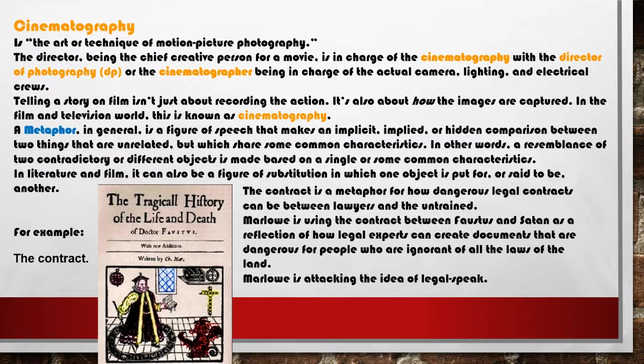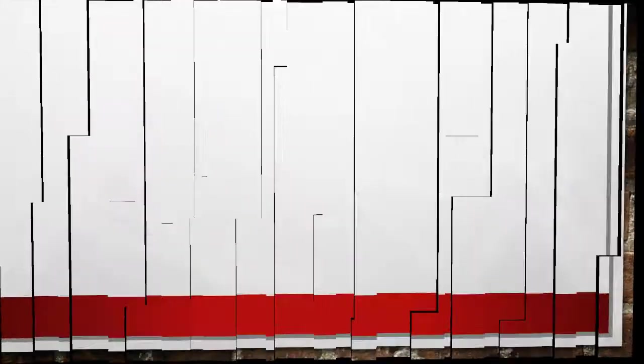What Marlowe is doing is using the contract between Faustus and Satan as a reflection of how legal experts can create documents that are dangerous for people who are ignorant of the laws of the land. He's attacking the idea of legal speak — not only do you have to read, you have to be able to read this legalese. If you trace how Marlowe depicts the contract within the dialogue, there are many references you could look at using this as a metaphor for the legal contract itself.